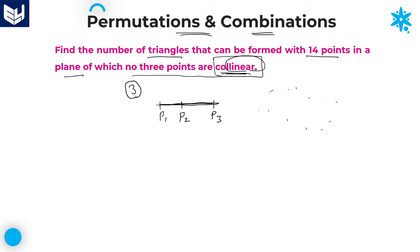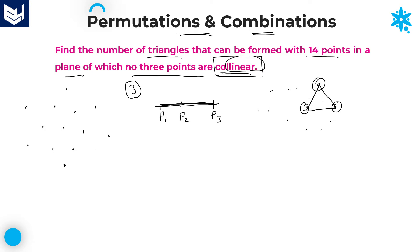No 3 points are collinear means these kinds of points — all on the same line — are not present in the plane. Taking all 14 points labeled 1 through 14 as non-collinear points, how many triangles can you form? To form any triangle, we require exactly 3 points.